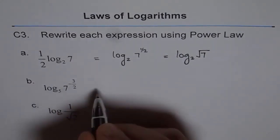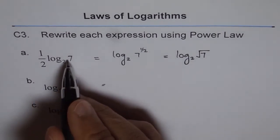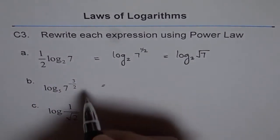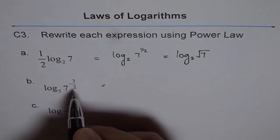Similarly, this one could be written as minus 3 over 2. So we are doing the reverse of what we did here. But we are applying power law either way. Power law, this power comes as coefficient of log. It gets multiplied.